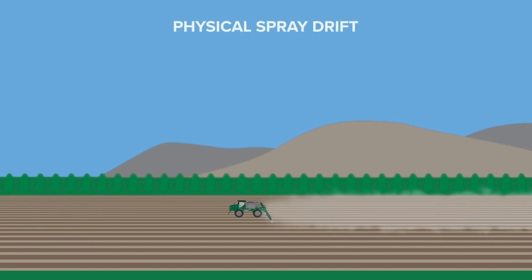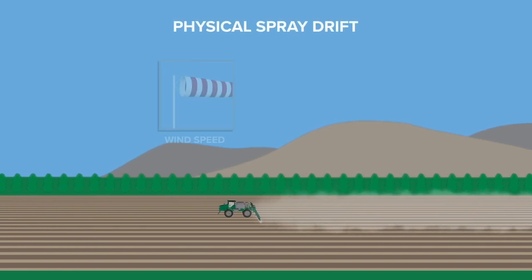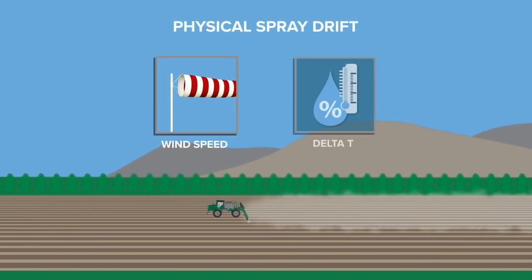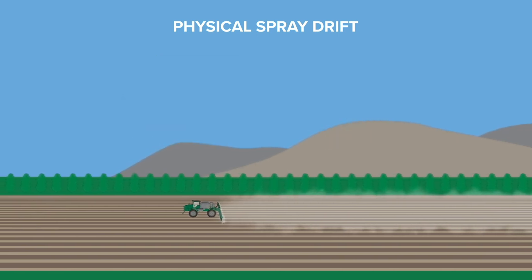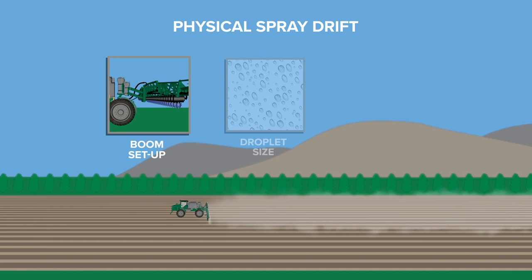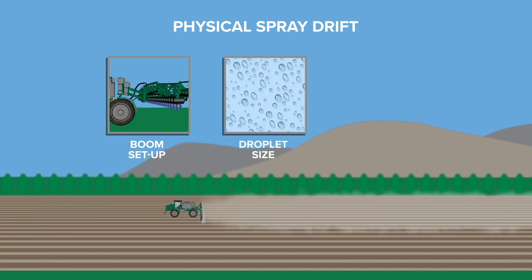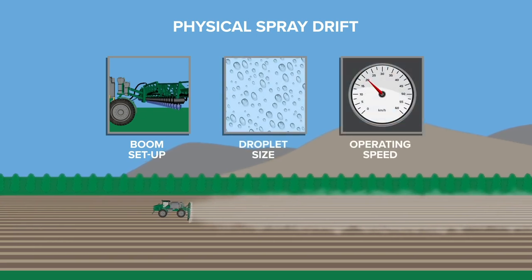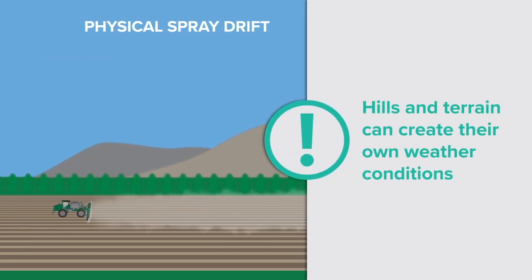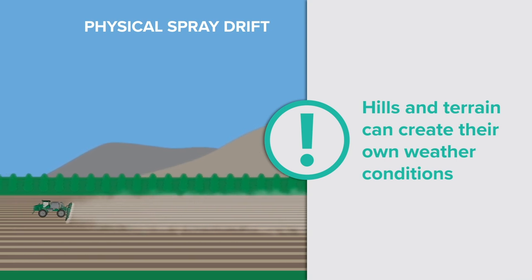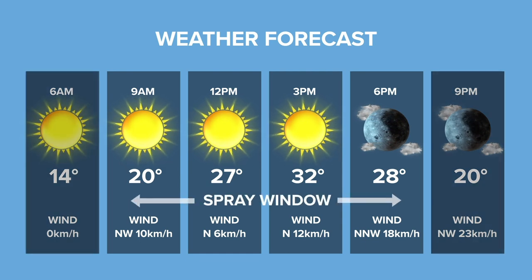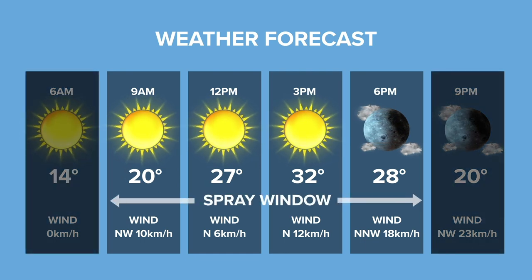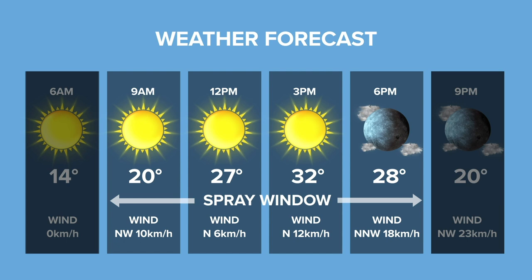Physical spray drift is influenced by environmental factors like wind speed, temperature and humidity, and operational factors including boom setup, droplet size and operating speed. Remember that the hills and terrain around you can create their own weather conditions. Always check the local weather forecast and conditions before you spray and plan your operation to match the available spray window.